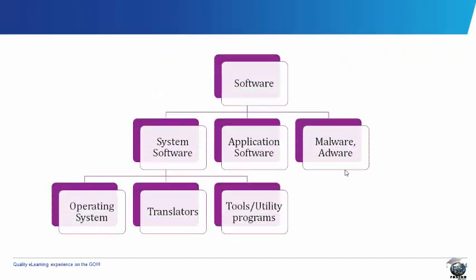This is computer software. Computer software is divided into three: the system software, the application software, and malware. The system software can be divided into operating system (OS), translators, and utility programs.